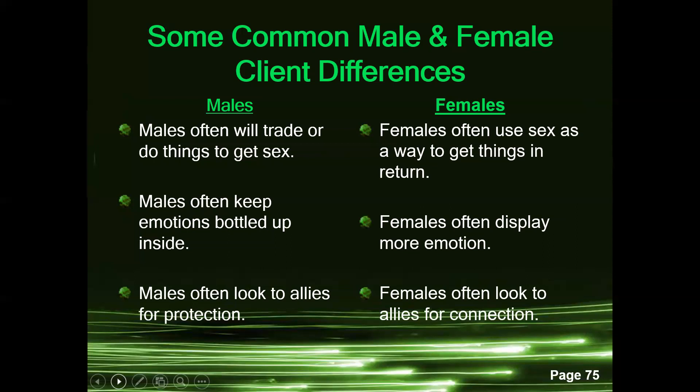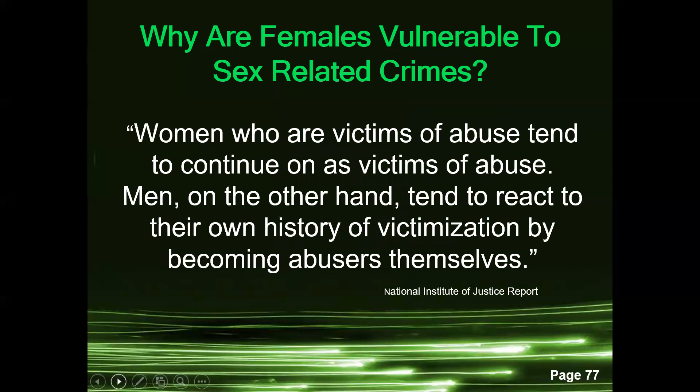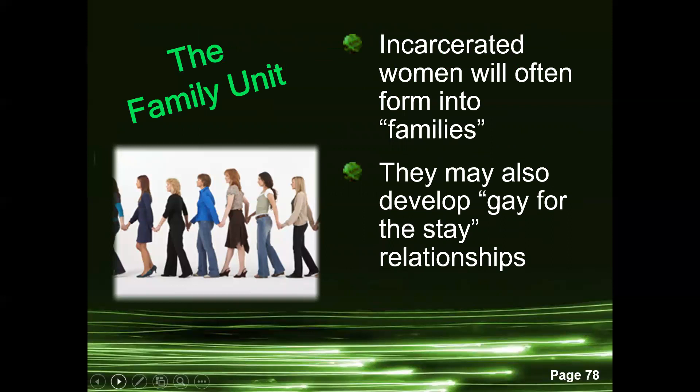Some common male and female client differences: males often trade or do things to get sex, tend to keep emotions bottled up, and look to allies for protection. Females often use sex as a way to get things in return, display more emotion, and look to allies for connection. Women who are victimized tend to continue as victims, while men tend to react to their own history of victimization by becoming abusers themselves. Incarcerated women are known for forming family units with specific gender roles and may develop 'gay for the stay' relationships.